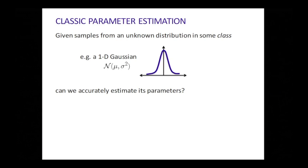There's a general family of problems called parameter estimation — old problems that date back 100 years. The prototypical problem is: you're given samples from some unknown distribution, but you're promised it lives in some nice class. The prototypical example is imagine you're given samples from a Gaussian. You know it's a Gaussian, you just don't know its underlying parameter mu — its mean — and its variance sigma squared. Can you accurately estimate its parameters from those samples?